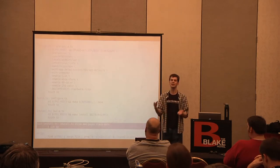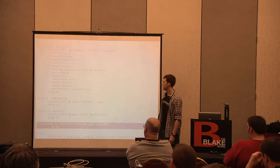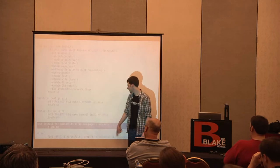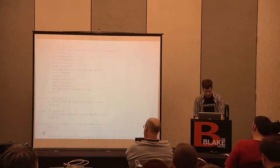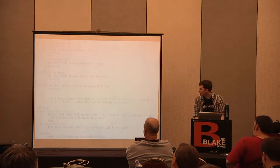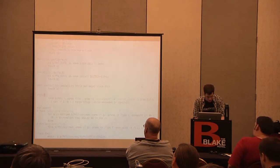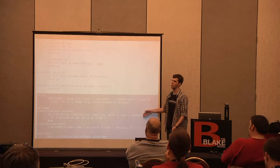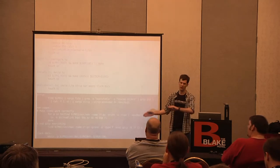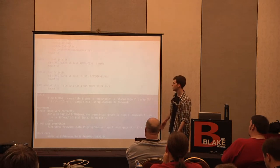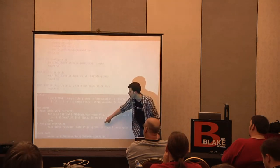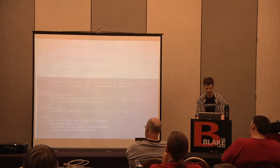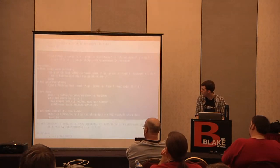One important note: you cannot do a global 'cd' (change directory) in a makefile. Each line is an independent shell command. If you need to change to another directory to run a command, you must do it on the same line, using '&&' to chain: 'cd directory && run_command.' If a command in the makefile returns a non-zero exit code, make will give up immediately unless you tell it not to — you can prefix a line with a dash (-) to ignore its exit code.